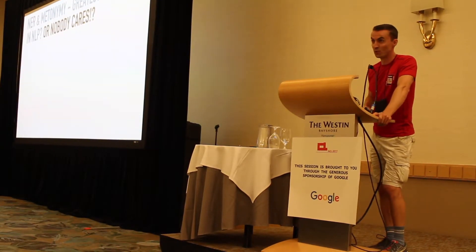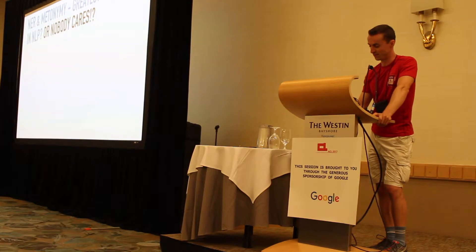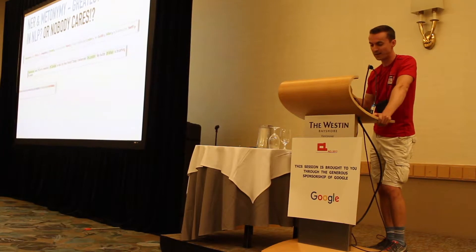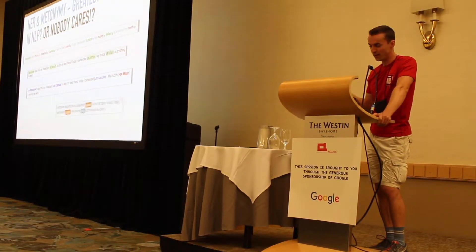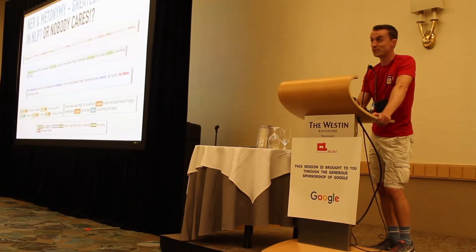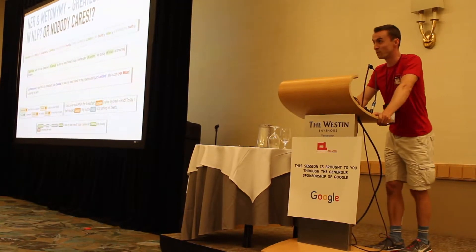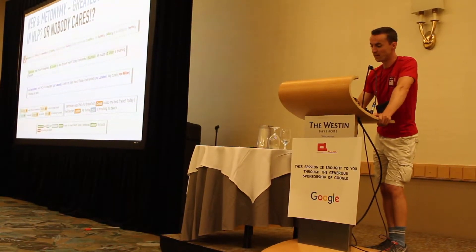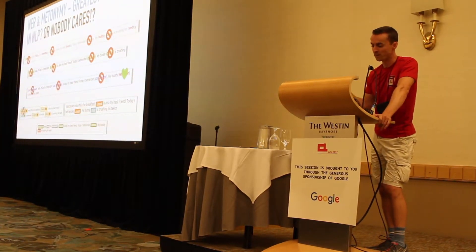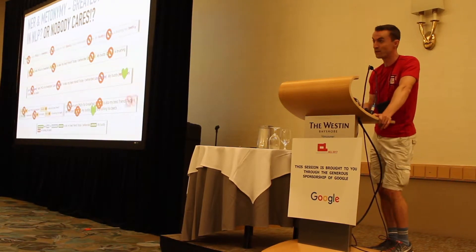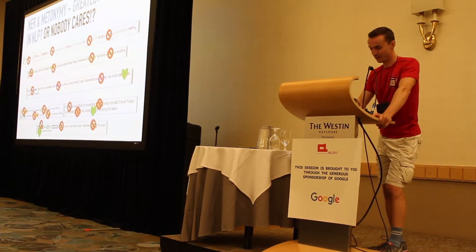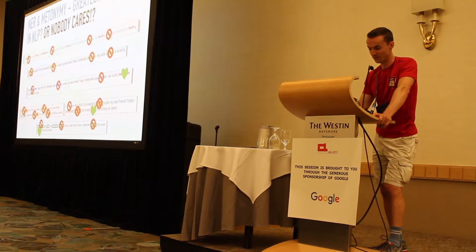My first port of call was NER, to see whether we can use it to detect metonymy. With a selection of six popular taggers — Google NLP, Illinois NLP, OpenNER, Gate, etc. — I created 24 deliberately easy-to-detect metonymic examples. But as you can see, out of 24, only three are actually detected by NER. So NER claims to understand metonymy, but I don't think that is the case.